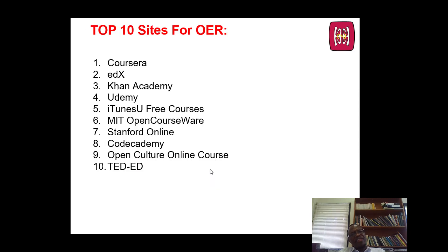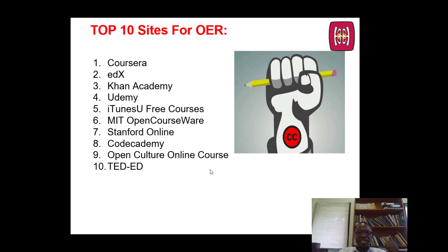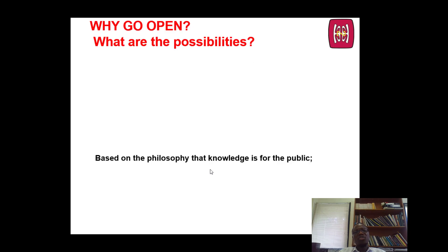How do we access OER? Where do we find them? Here are 10 sites for OER — you may not have to reinvent the wheel, as there is a lot of content that has already been developed. You can just customize and use it in your context, with the key considerations to Creative Commons. So Coursera, EDX, Khan Academy, Udemy, iTunes, TedEd, and Open Culture online courses are all available for us to use.